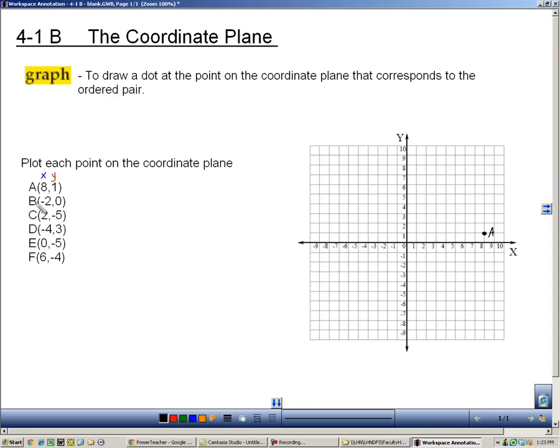And we're going to do that with all these. Capital B is to the left 2, and then up 0. So negative 2, 0 is right there. I'll label that with a B.